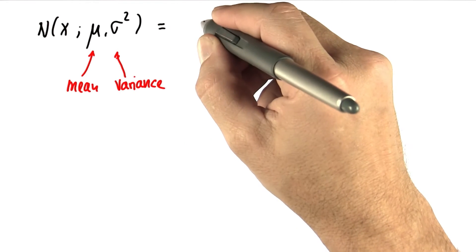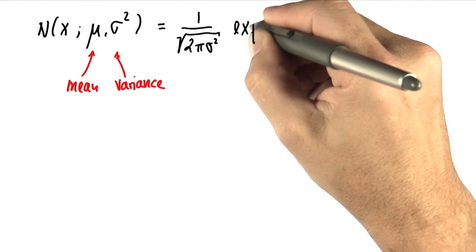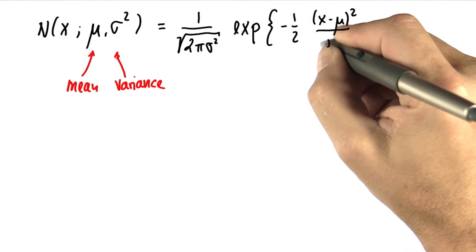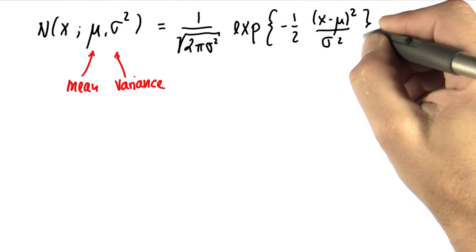So here's our normal distribution again. I'm going to write it as exp for exponential minus one half x minus mu squared over sigma squared.